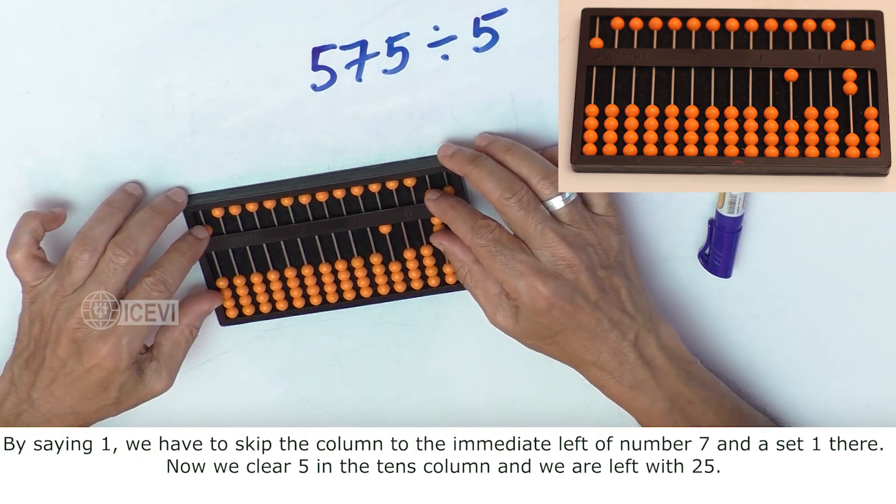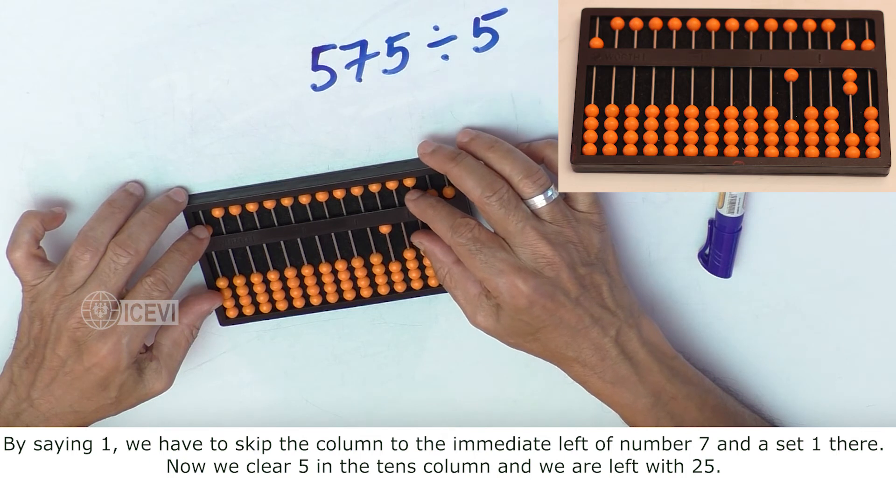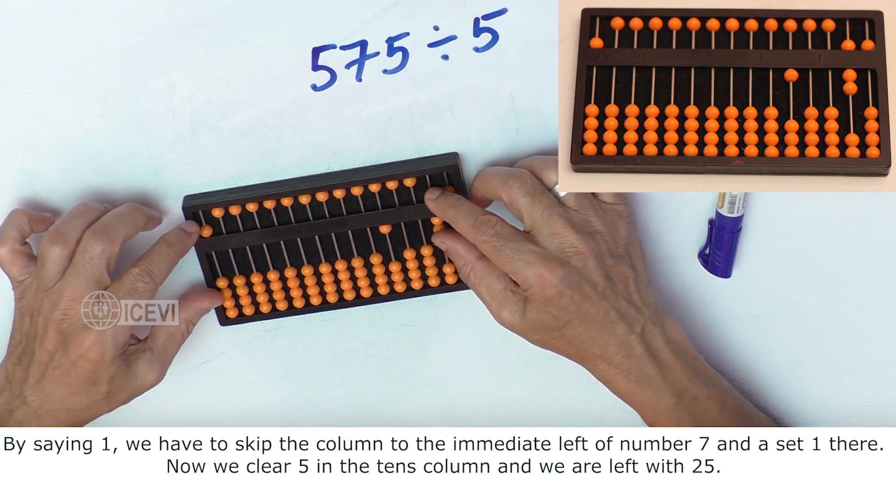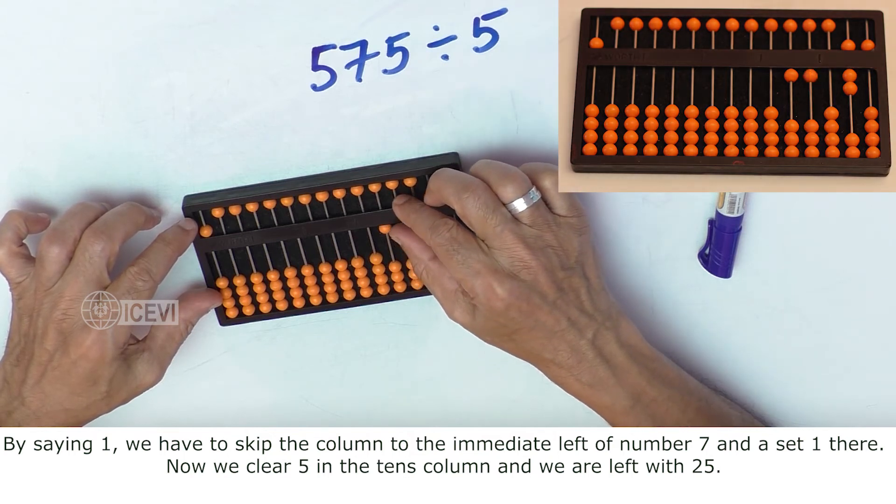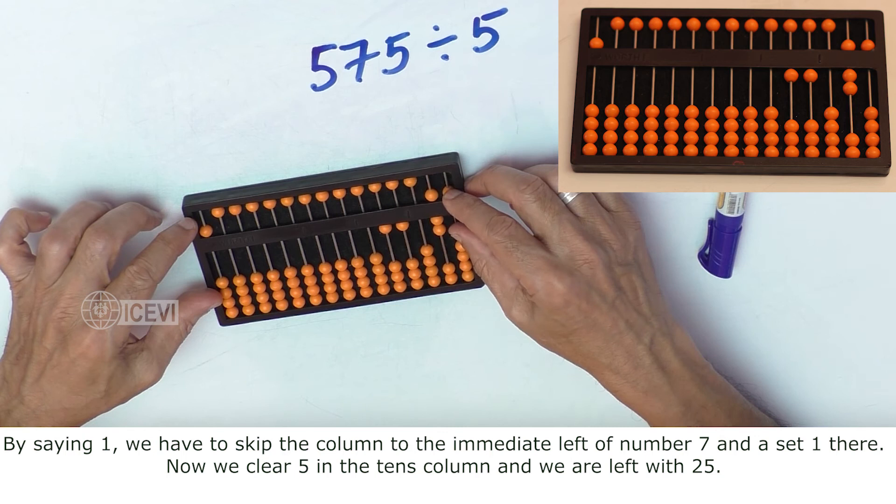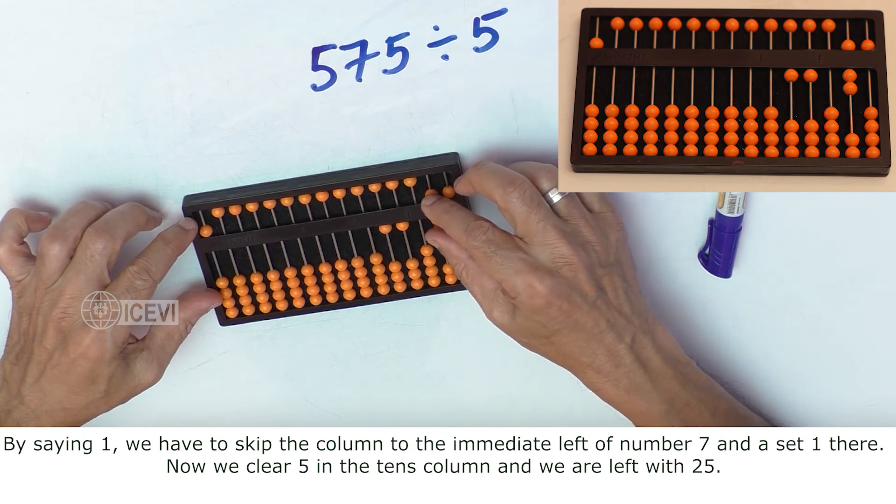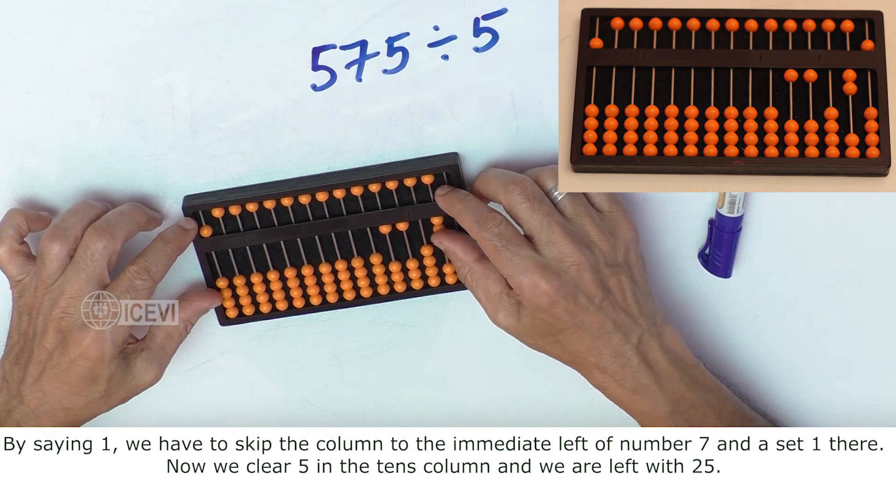By saying 1, we have to skip the column to the immediate left of the number 7 and set 1 there. Now, we clear 5 in the tens column and we are left with 25.